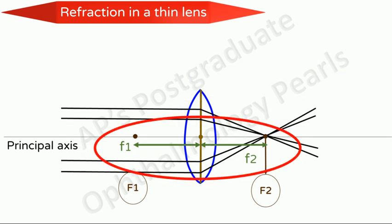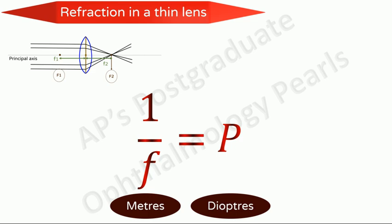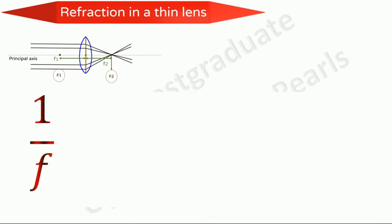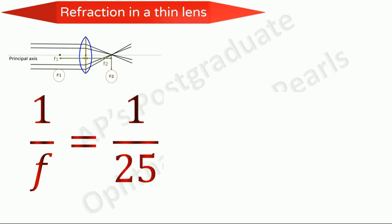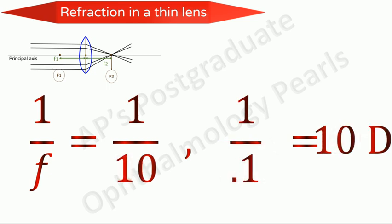Knowing the focal length helps us to calculate the power of the lens. The reciprocal of the second focal length in meters gives us the power of the lens in diopters. For example, the power of a convex lens of focal length 25 cm is 1/0.25, that is 4 diopters. Similarly, for a focal length of 10 cm, power is 1/0.1, that is 10 diopters. So a lens with a shorter focal length has a higher power, and vice versa.